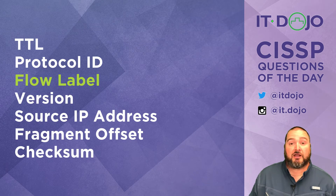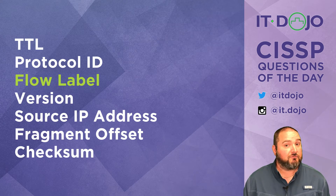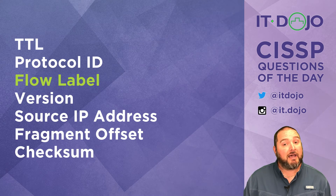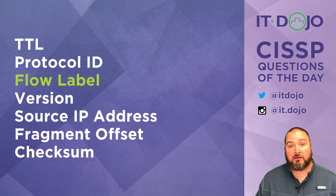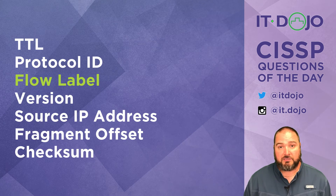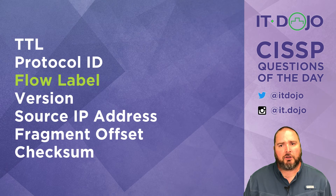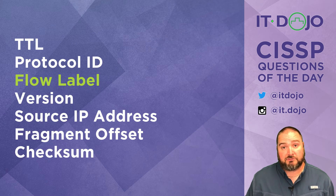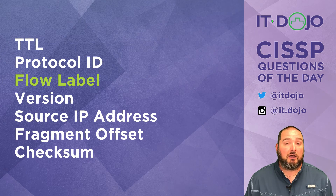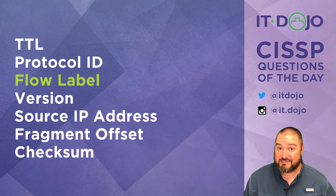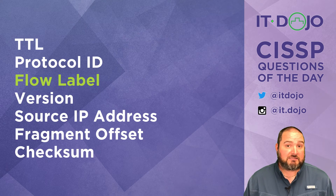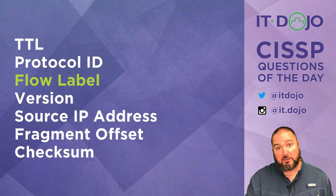The fragment offset and checksum both exist in an IPv4 header, but neither exists in an IPv6 header. The fragment offset doesn't exist in IPv6 because intermediate routers aren't allowed to do fragmentation — that would be packaged elsewhere in an extension header. The checksum was dropped because IPv6 developers felt there were already adequate checksums built into other protocols and communication pathways, and given the increased reliability of modern networks, having yet another checksum in the IPv6 header — which only checks the header itself, not the integrity of your data — just wasn't necessary.